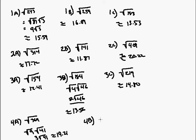4b: the square root of 147. That can be broken down into the square root of 49 times the square root of 3, which is 7 square root of 3, and that is approximately 12.12.